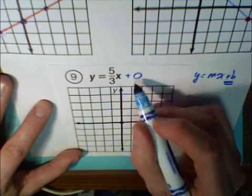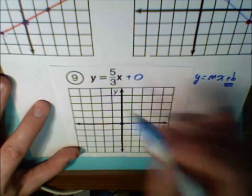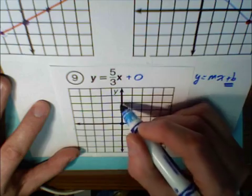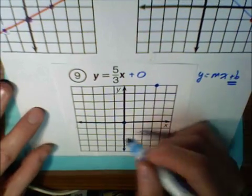So our y-intercept in this case is 0. So I'm going to plot the first point, 0. And then I count in increments of the slope again. Rise 5, run 3: 1, 2, 3, 4, 5. 1, 2, 3. And I'm going to go in the negative direction.